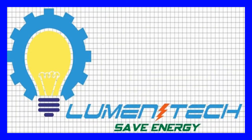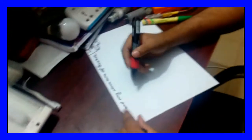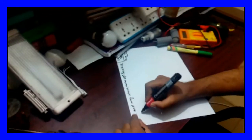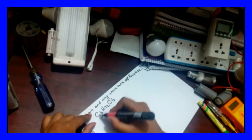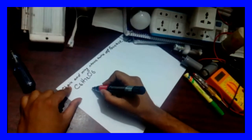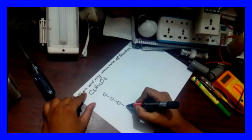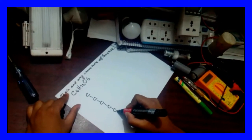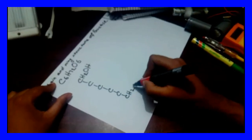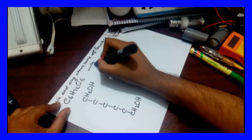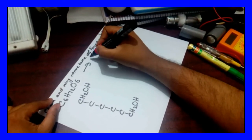Hello everyone, today I'm going to show you how to draw the ring and chain structure of fructose. The molecular formula of fructose is C6H12O6, so basically there are six carbons: one, two, three, four, five, six. Here is H, H, H2OH.